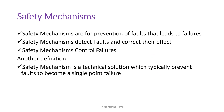How can we prevent random failures? By establishing a safety mechanism in place. Safety mechanisms are for prevention of faults that lead to failures. They detect faults and correct the effects. A safety mechanism is a technical solution which typically prevents faults from becoming a single point failure.